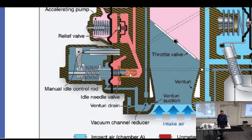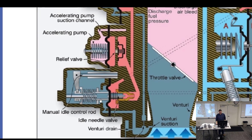That's the little needle that goes in here. When it's all the way in, it seats up against there and blocks off a little bit. As you pull it out, more and more fuel is allowed to come through. The manual control rod is actually part of the throttle — interconnected to the throttle valve. As you open the throttle valve, the needle moves out. They're connected.